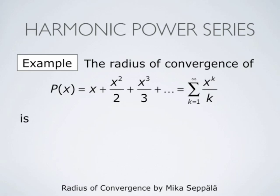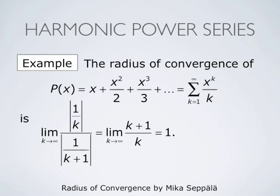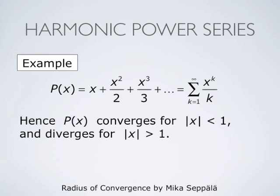Let us compute the radius of convergence for the power series p(x) equals x plus x²/2 plus x³/3 plus and so forth, that is summation k from 1 to infinity of x^k divided by k. Here the coefficient a_k is 1/k. Then a_k divided by a_{k+1} is (1/k) divided by (1/(k+1)). Since both terms are positive we may drop absolute values. This simplifies to (k+1)/k, and the limit of that as k goes to infinity is 1. Therefore the radius of convergence of this power series is 1, so it converges when |x| < 1 and diverges when |x| > 1.